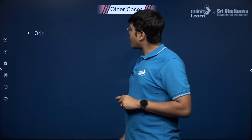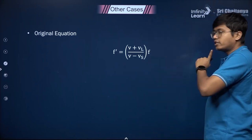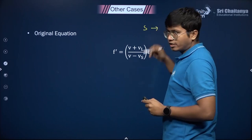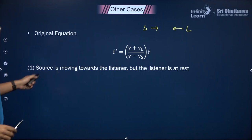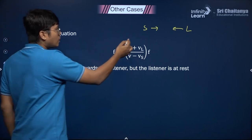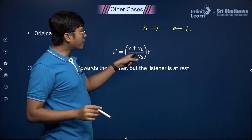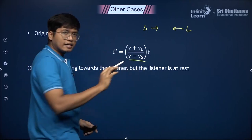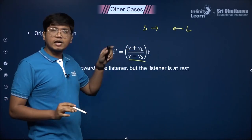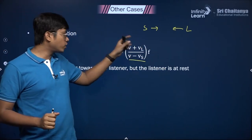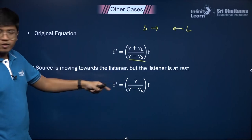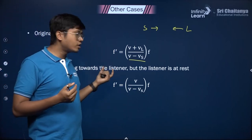This is the only formula and the only case you need to remember, because everything else will just fall as a consequence of this. Let's move on to the other cases, starting with the original equation — source and observer moving towards each other. The first case: source moving towards listener, but listener is at rest. Source moving towards observer is the same as our base case, so the bottom part stays as is. The listener is at rest, which means Vl becomes zero. Putting Vl = 0, the formula becomes F' = V / (V - Vs) × F.